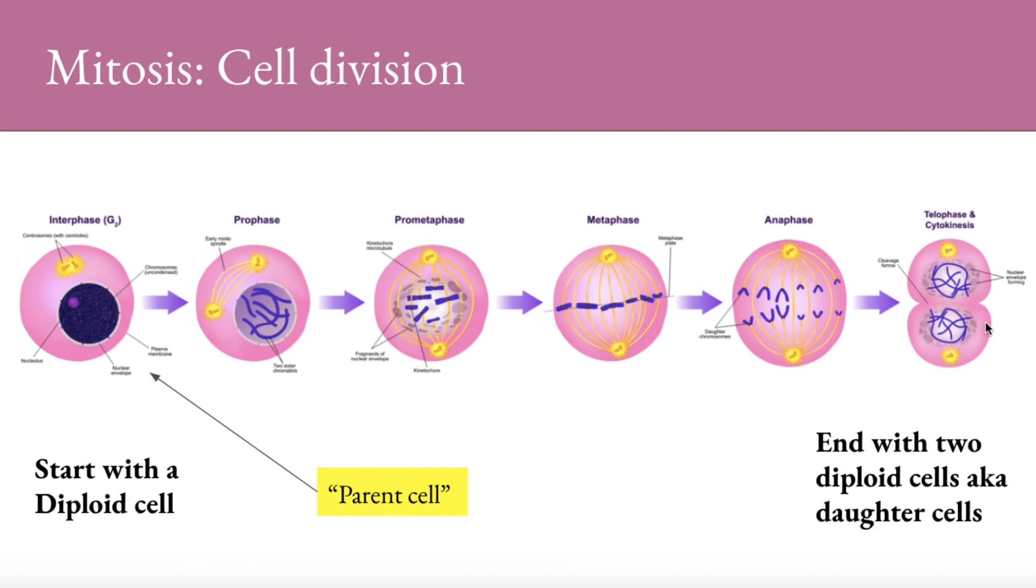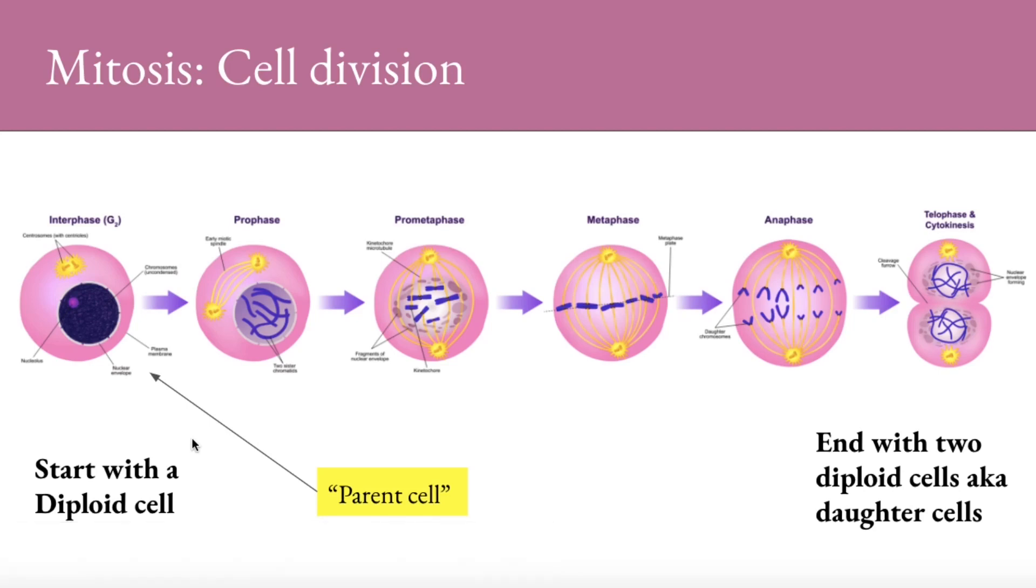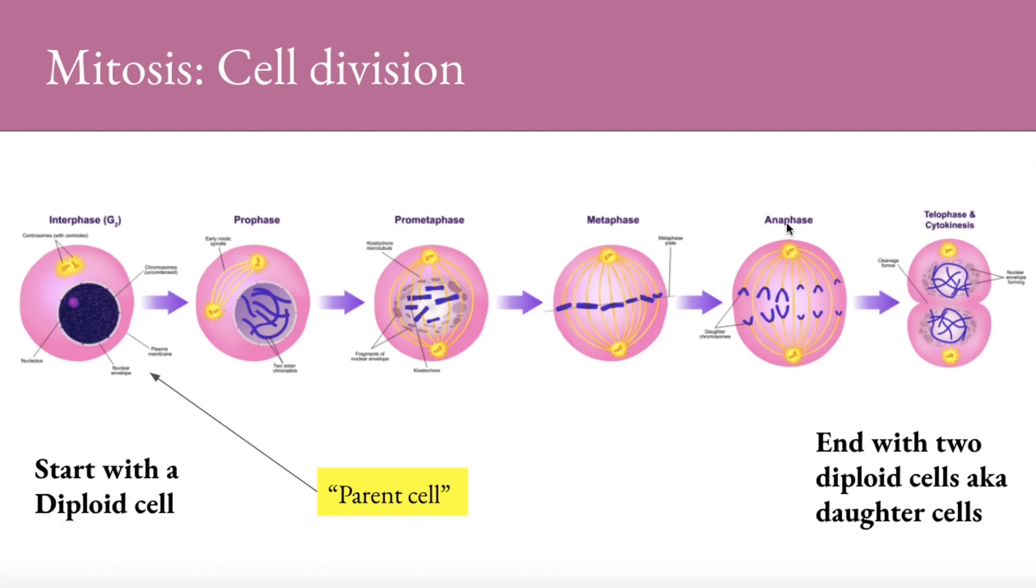Mitosis. This is cell division of all cells except for the sperm and the egg. It starts with a diploid cell. Do you remember what a diploid cell is? I hope you're thinking that it has a complete set of chromosomes. We call this cell the parent cell. It goes through PMAT: prophase, metaphase, anaphase, telophase. Those are the phases of mitosis.